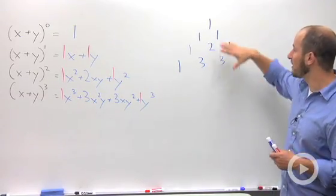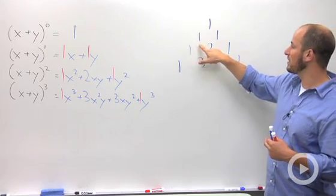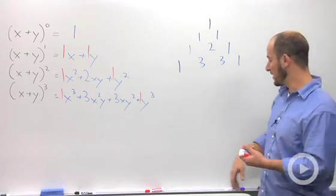This is what's called Pascal's Triangle. And what this does is just continues where it's this triangle where each number is formed by adding the two numbers above it. So if we wanted to continue this on,